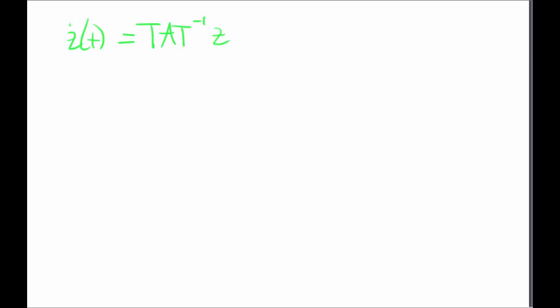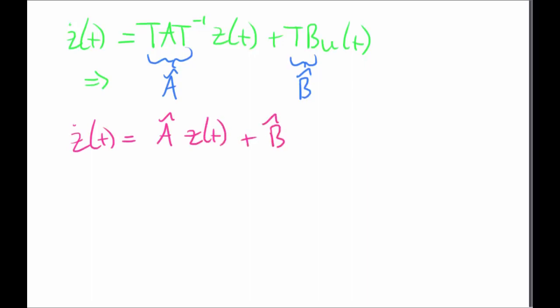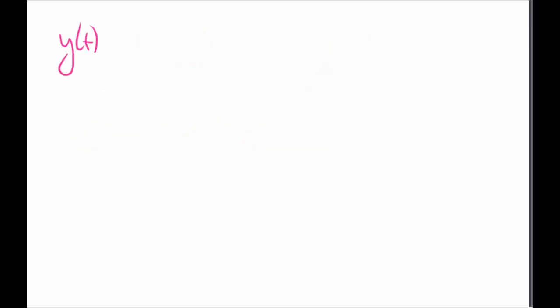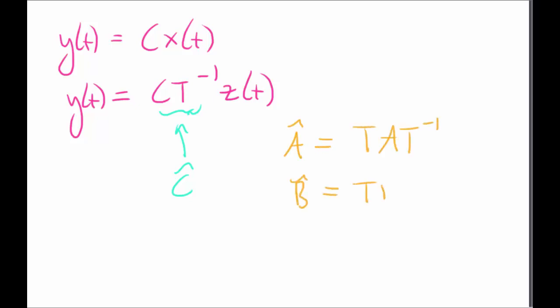Where Z dot is in terms of T A T inverse and T B. So we can see that the first part is the new A matrix, A hat and B hat. So we can rewrite this in the new balanced system. And we can now represent the output of the system in terms of Z dot instead of X dot, as seen here, where it is the new output matrix C hat. So we've got the new system A hat, B hat and C hat in terms of the transformation matrix and its original state space matrices.